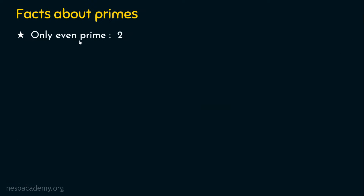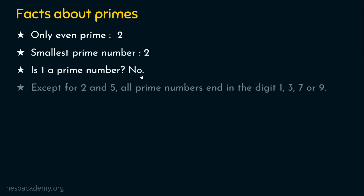2 is the only even prime number — all other prime numbers are odd. And 2 is also the smallest prime number. Note that 1 is not a prime number. Another interesting fact is that except for 2 and 5, all prime numbers end in the digit 1, 3, 7, or 9. If a number ends with 2 or 5, it cannot be a prime number — because a number ending in 2 can be divided by 2, and one ending in 5 can be divided by 5.